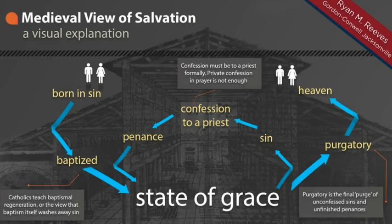Throughout one's life, a person maintained their state of grace through the sacramental system, which at this period had seven sacraments: baptism, confirmation, the Lord's Supper or Eucharist — in which one communed on the body and blood of Christ according to the doctrine of transubstantiation, with the priest offering up the sacrifice of Christ on the altar — marriage, holy orders, and at the end of life, last rites or holy unction. One's entire life was tied up with the sacramental system of the church, which continually restored grace to the sinner.